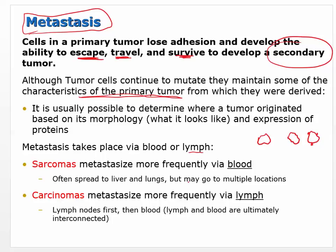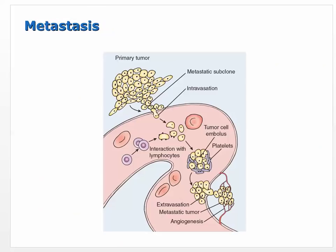Sarcomas often spread through blood to the liver and lungs. Carcinomas going through lymph hit the lymph nodes first, then also move into the blood — so metastasis to lymph nodes is more common with carcinomas. Here's a diagram of metastasis: the tumor has cells escaping that should die but don't, and they form a secondary tumor somewhere else.